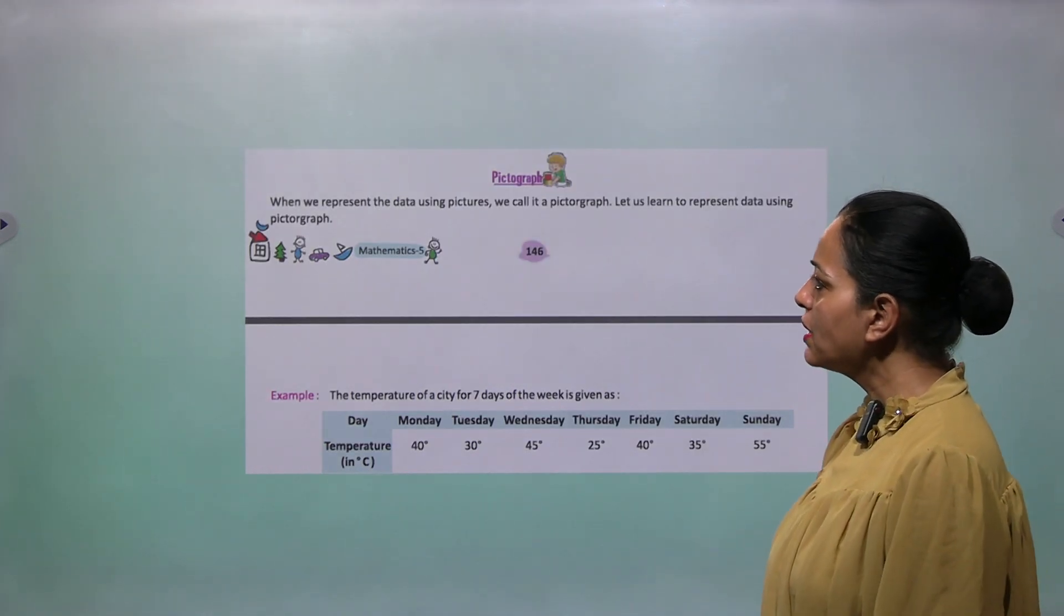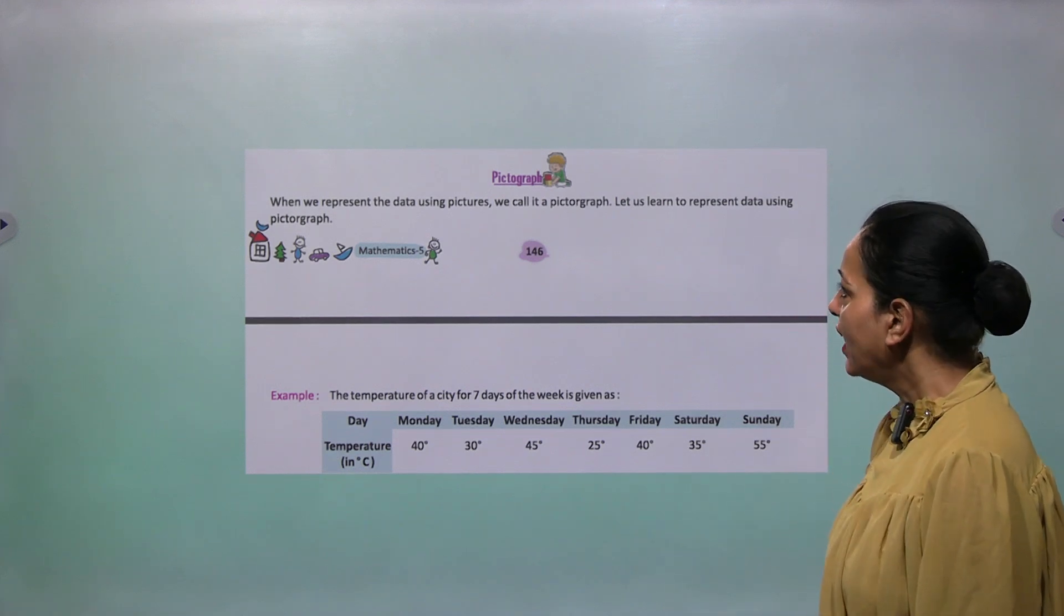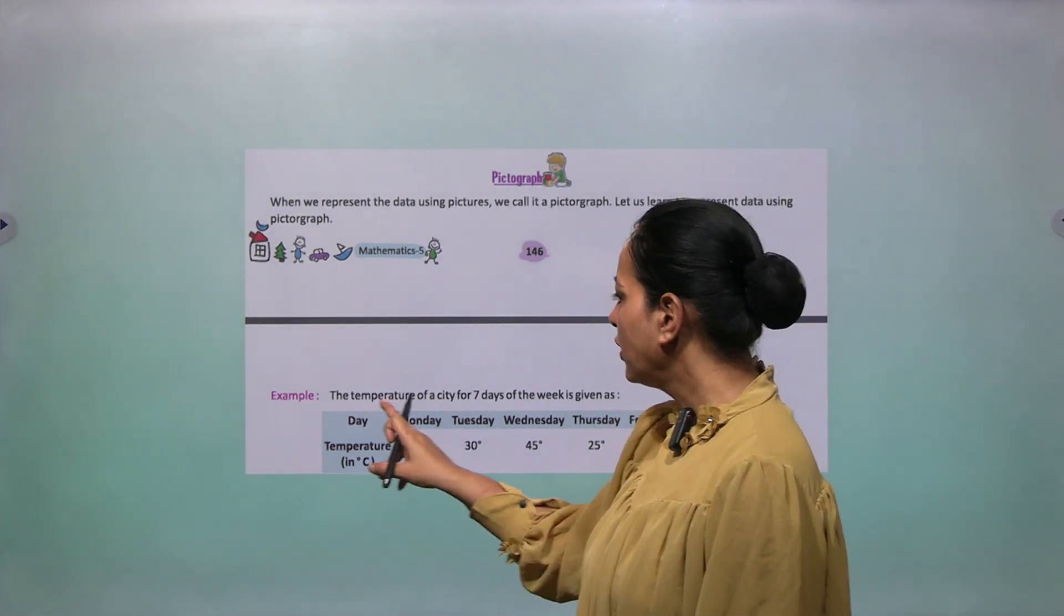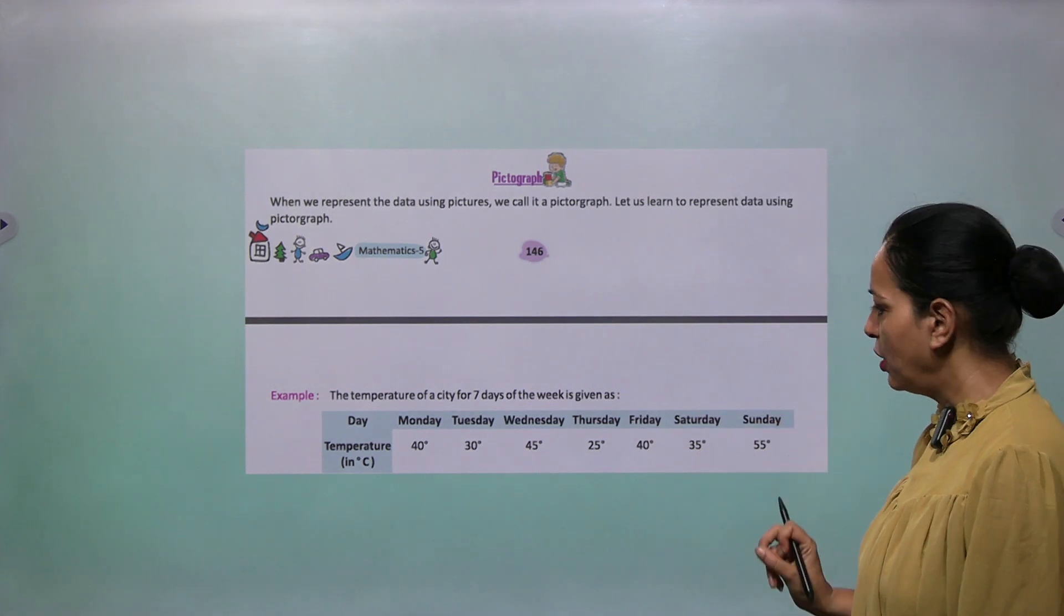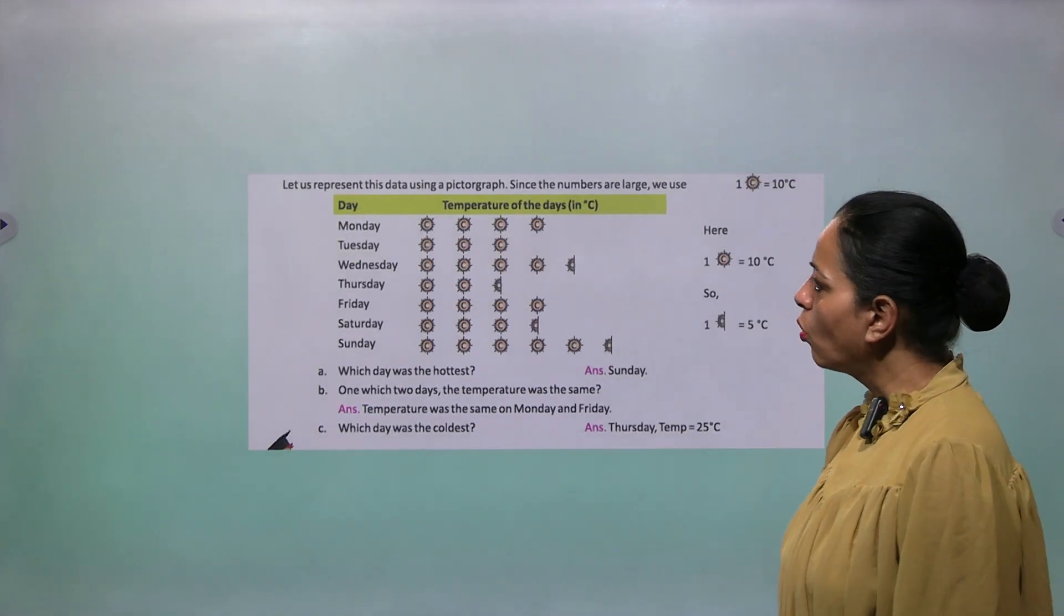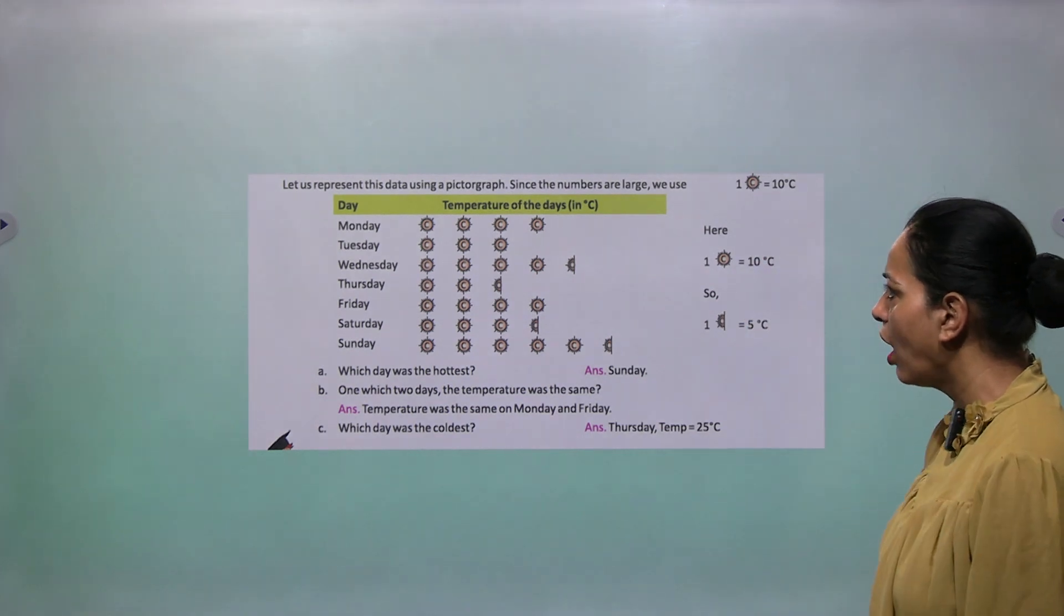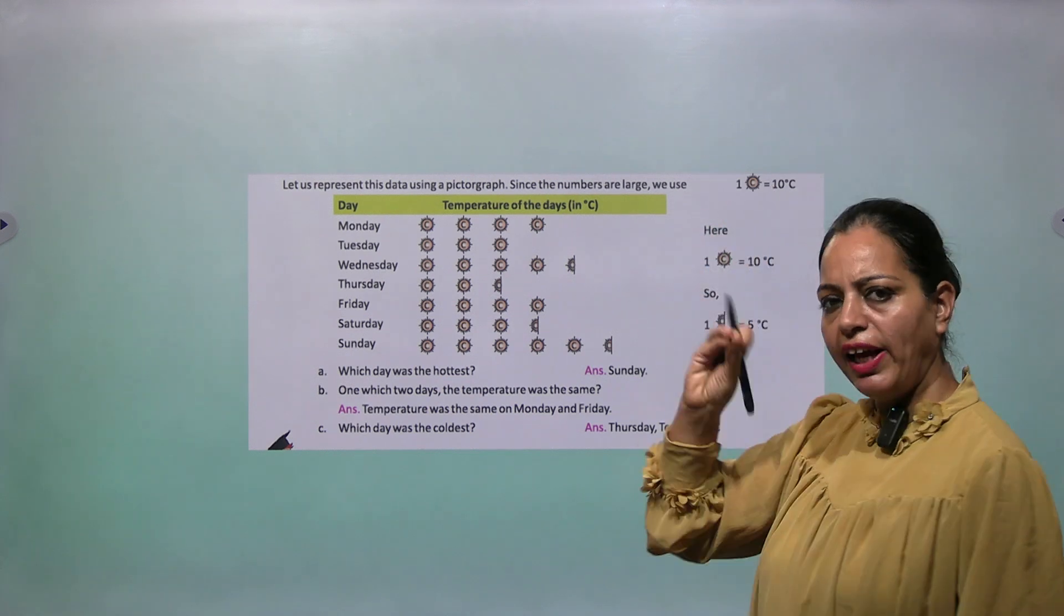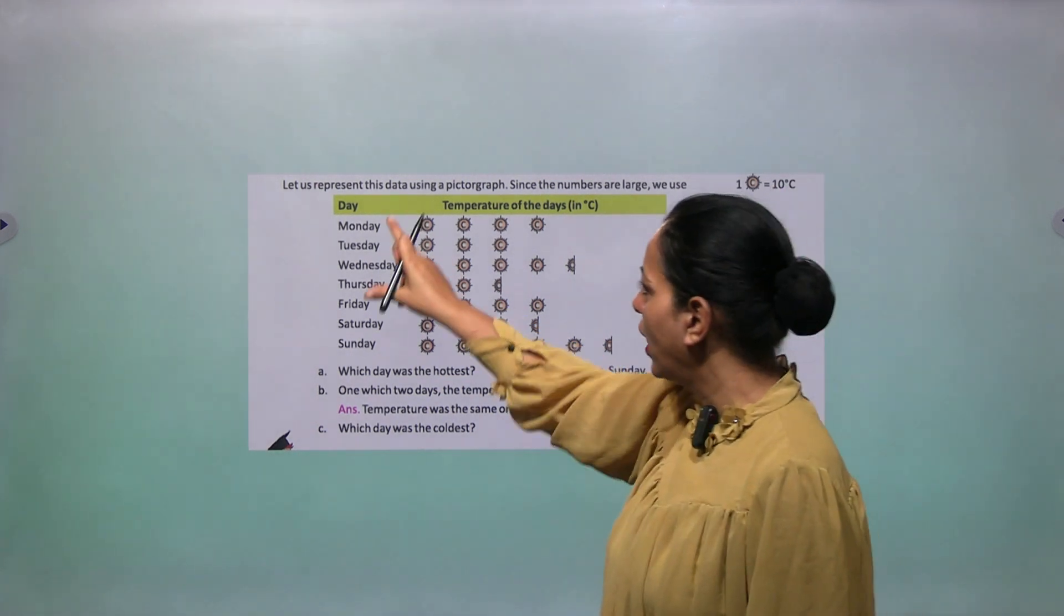Now the next one is pictograph. When we represent the data using pictures, we call it a pictograph. Let us learn to represent data using pictograph. Example: The temperature of a city for seven days of the week is given. Let us represent this data using a pictograph. Since the numbers are large, we use a symbol like sun here that is 10 degree Celsius.